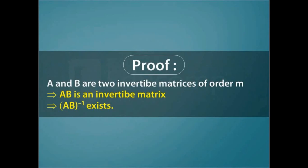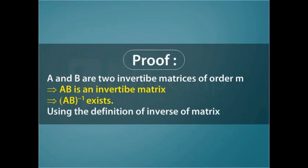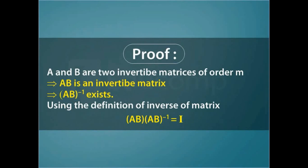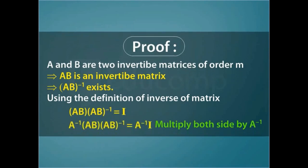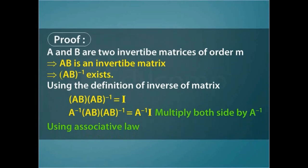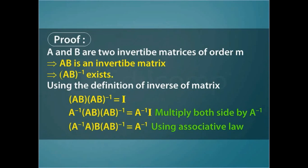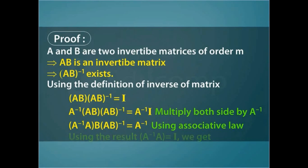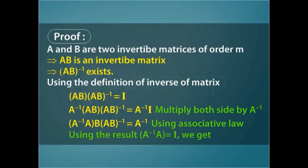Of order m. Using the definition of inverse of a matrix, we get the product of AB and AB whole inverse equals I. Pre-multiplying both sides by A inverse, we get the product of A inverse, A, B, and AB whole inverse equals A inverse times I. Using the associative law, this results in the product of A inverse A, B, and AB whole inverse equals A inverse. Using the result A inverse A equals I, we get the product of B and AB whole inverse equals A inverse.